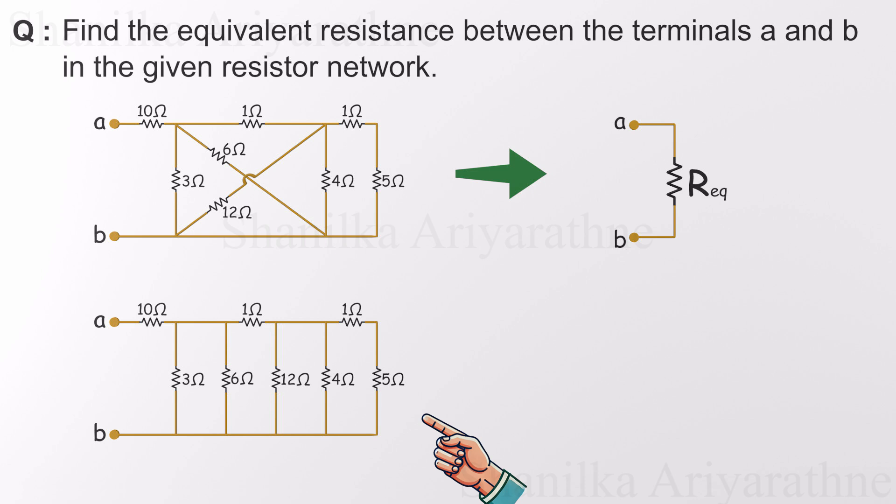Our strategy is straightforward. Identify series and parallel resistor pairs and simplify them one step at a time. So let's dive into the circuit and start looking for easy wins.